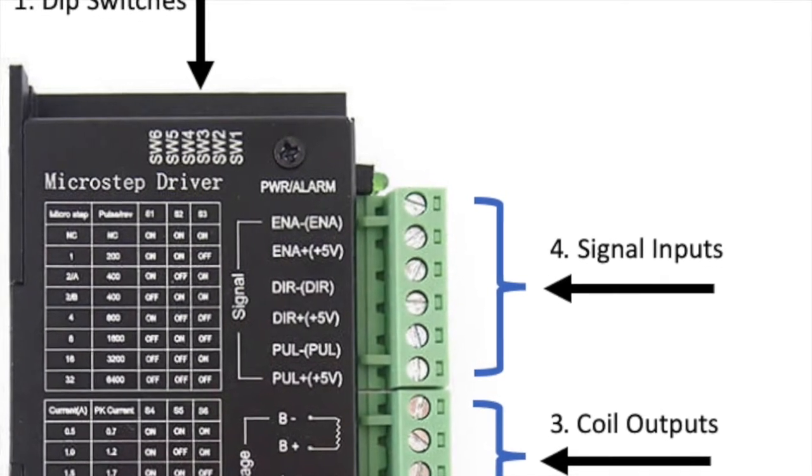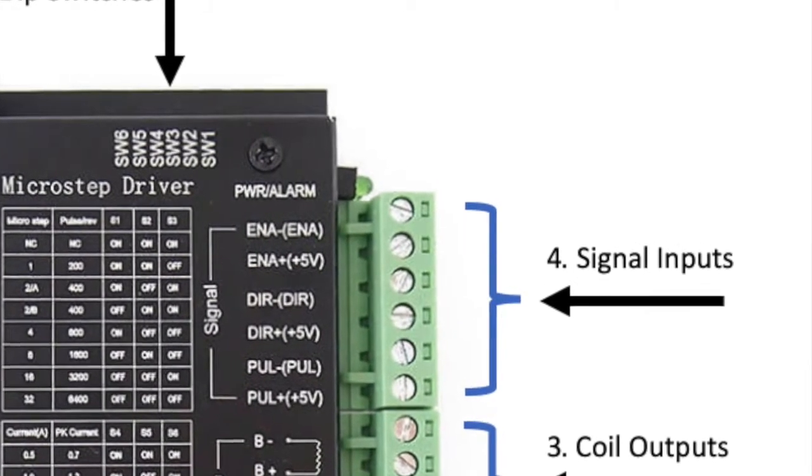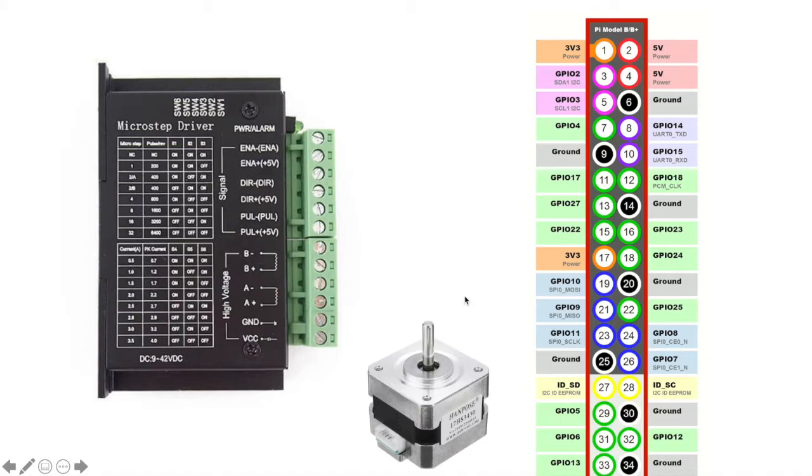The fourth part of the microstep driver is the signal. Simply tie the pulse minus, direction minus, and enable minus to the ground on the Raspberry Pi. Then, you can toggle the direction of the motor by putting either 5 volts or 0 volts on the direction pulse pin. I tied this pin to GPIO 27.